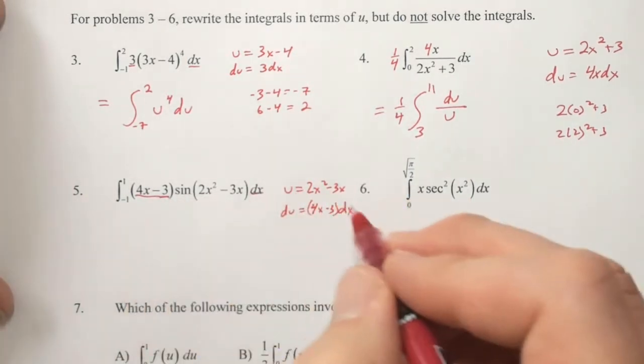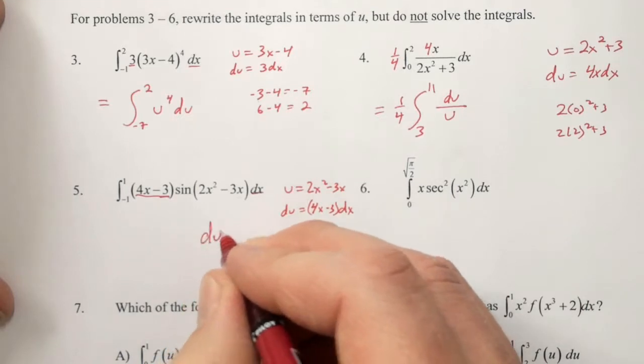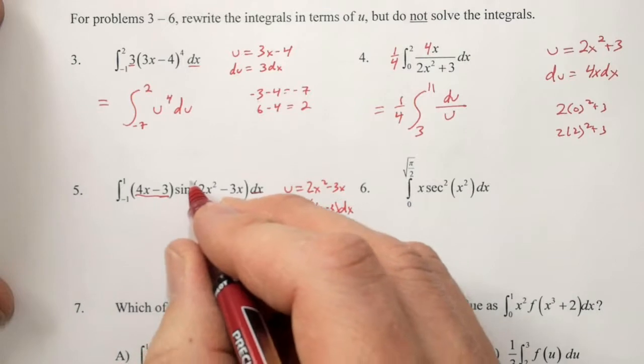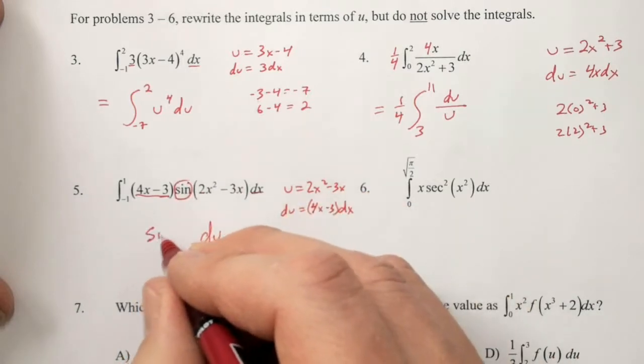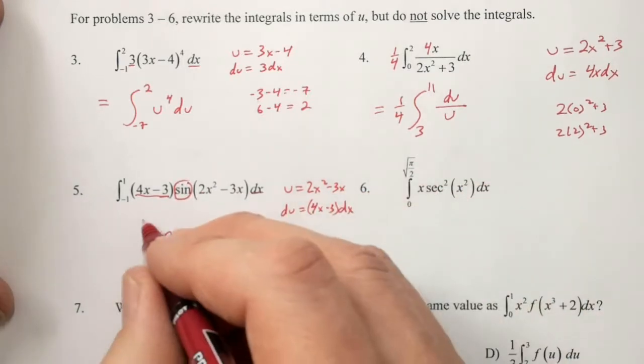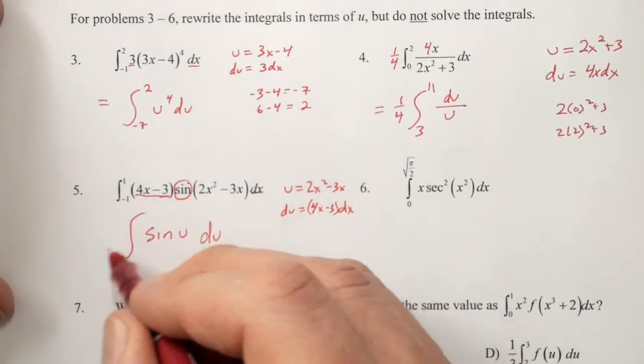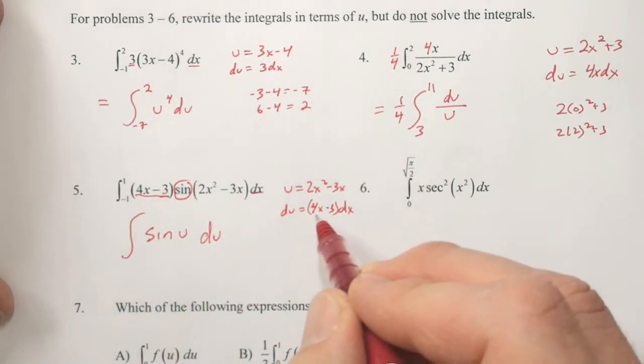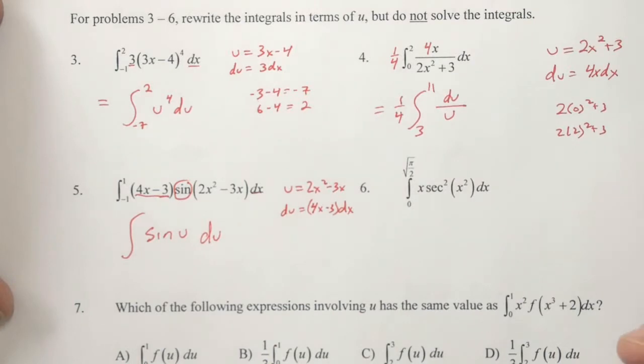So those two terms are going to go out and du is going to come in. 2x squared minus 3 is out and u is in. Sine was never touched, so sine is still part of our integrand. We don't need any coefficient out front because there is no need to modify on behalf of the du. But we do need our new bounds.